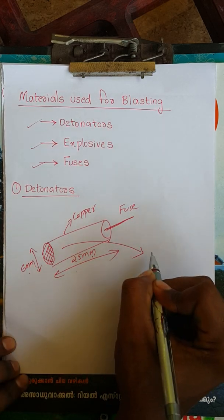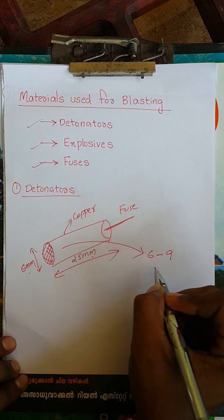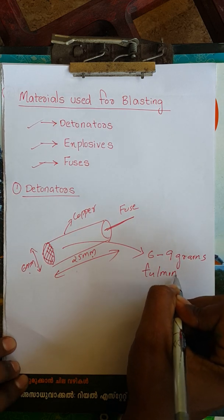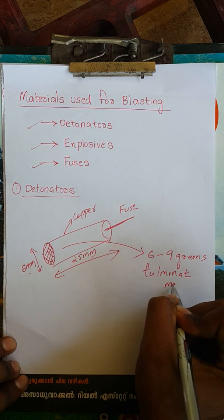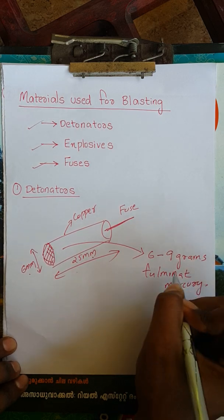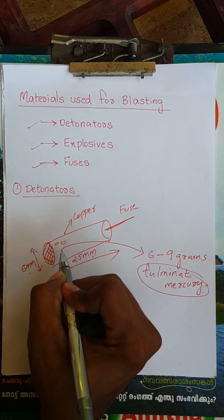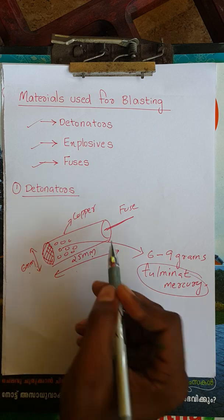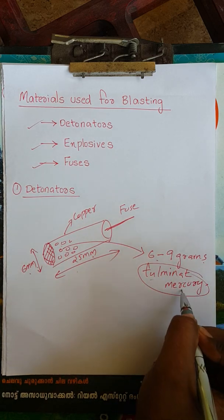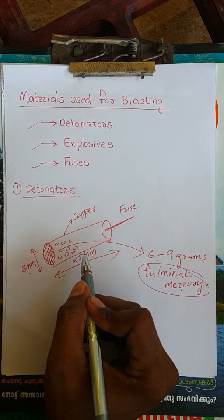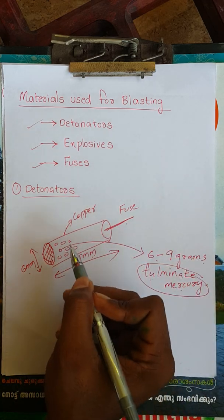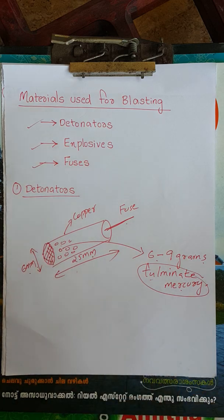The detonator contains 6 to 9 grains of fulminate mercury. The structure consists of: an explosion fuse, a copper cylinder with one side closed, and fulminate mercury grains inside.